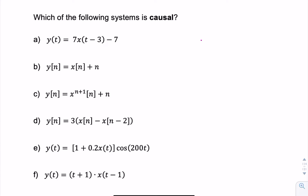Which of the following systems is causal? To test for causality, we want to see: does the output ever anticipate a future input? It's important for a system to be causal that this value here is less than or equal to t.